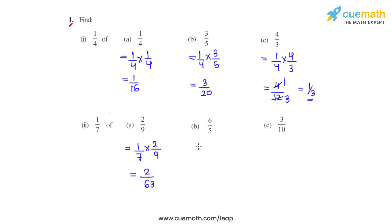Coming to part B, we write 1 over 7 times 6 over 5. Multiplying the numerators we get 6 and multiplying the denominators we get 7 times 5 as 35.